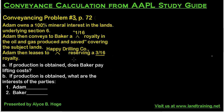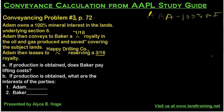They've thrown in a new question but again they're asking you what are the interests of the parties. If I were taking the AAPL exam I would just write out the problem every time to make sure I understand it and get it done correctly. So in this case, A owns 100% of the mineral interest in the lands underlying Section 6, and then Adam conveys to Baker using the 1/16th royalty interest here.